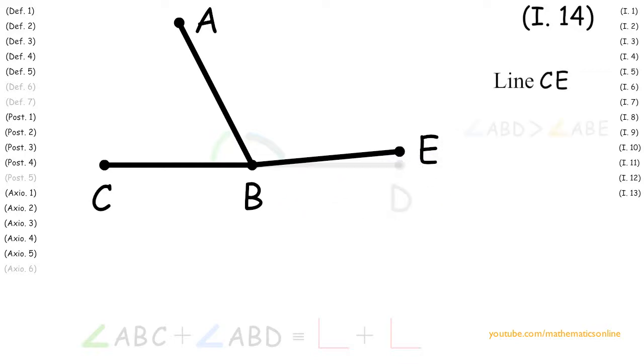Next since we have the straight line CE and the straight line AB forming two adjacent angles, then by Proposition 13, angle ABC plus angle ABE are congruent to the sum of two right angles.